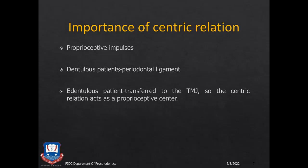In a dentate patient these impulses are generated by the periodontal ligament. However, in the edentulous patient there is no periodontal ligament, so there is no proprioception or mechanoreception. In an edentulous patient, these sensors are transferred to the temporomandibular joint. So Centric Relationship acts as this proprioceptive centre — the TMJ in the case of edentulous patients guides both the operator and the patient to close in the ideal maxillomandibular relationship.